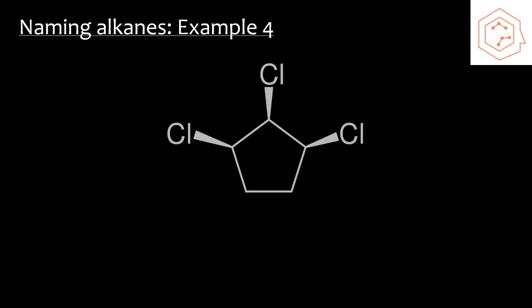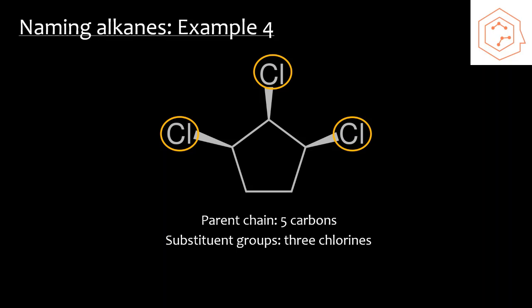Here's an example for naming an alkyl halide. First we want to identify the parent chain. Here there's only one option, it's going to be the five-membered ring. So we're going to use the prefix pent for this situation. Next, we're going to want to identify the substituent groups. Here we can see that we have three chlorine atoms attached to the ring. Remember, since there's more than one of the chlorines, we're going to want to use the tri prefix.